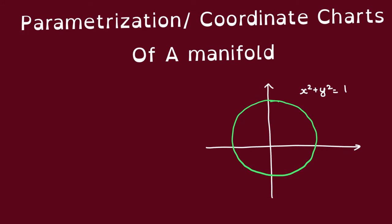Let's look at the example of the unit circle. Let's say that we want to show that it's a one-dimensional manifold. What does that mean? That means that locally, this unit circle just looks like the real line.